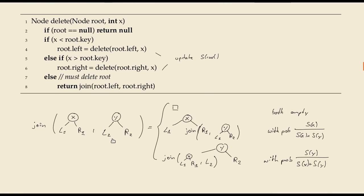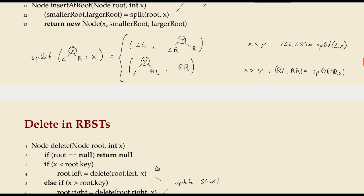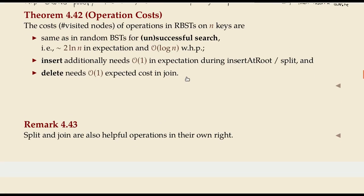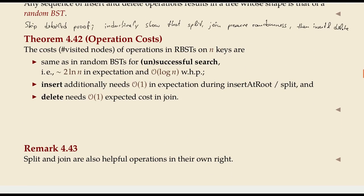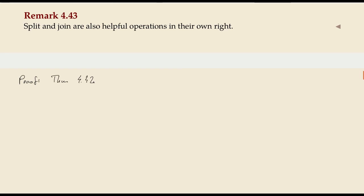Even in the worst case, split and join never follow more than one path in the tree. So if the tree has logarithmic height they will never need more than that. That they only need constant time for the average node they are invoked on depends on something we've already analyzed — namely the spines. Result number one is just the consequence of the theorem above and our result for random BSTs: this holds for search.